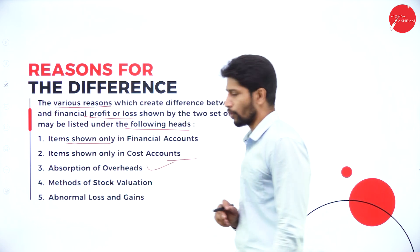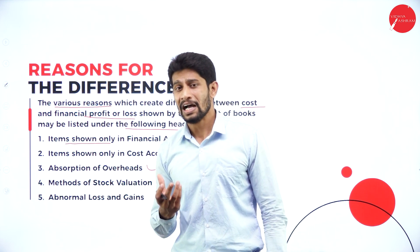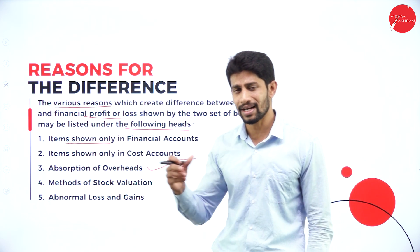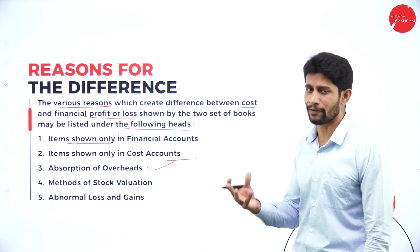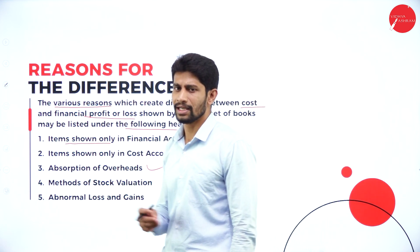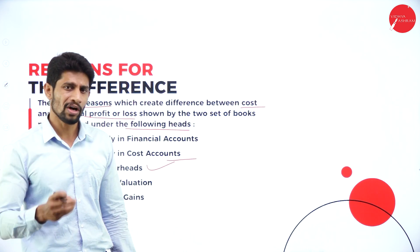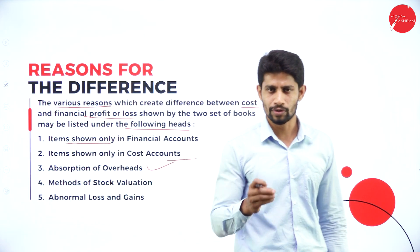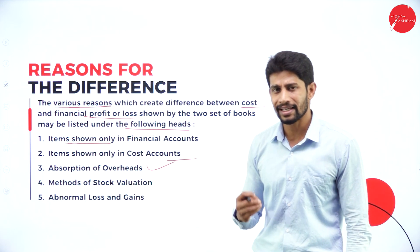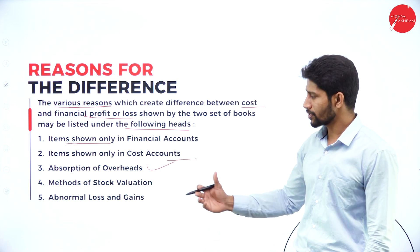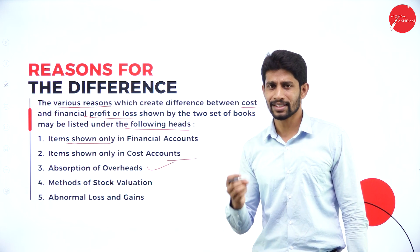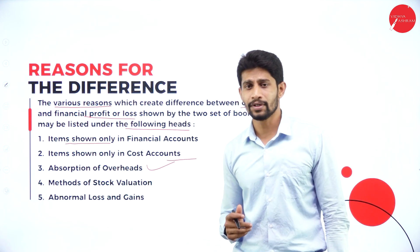The third reason: absorption of overhead. Overhead is essentially expenses. Sometimes we are not going to show the overhead the same way in both the financial accounts and cost accounting, and because of this you may see a difference in profit. The fourth reason: methods of stock valuation. The method of stock valuation is different in financial accounts compared to cost accounts, and because of that the books show a difference in profit. The fifth reason: abnormal losses and gains. Because of abnormal losses and gains treated differently in each book, you may also see a difference in profit.